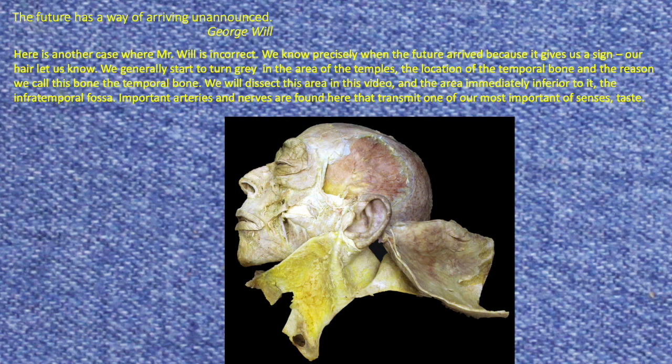The famous newspaper commentator George Will once wrote, 'The future has a way of arriving unannounced.' Well, here's another case where Mr. Will is incorrect. We know precisely when the future arrived because it gives us a sign — our hair lets us know. We generally start to turn gray in the area of the temples, the location of the temporal bone, and the reason we call this bone the temporal bone. We will dissect this area in this video and the area medially inferior to it, the infratemporal fossa.